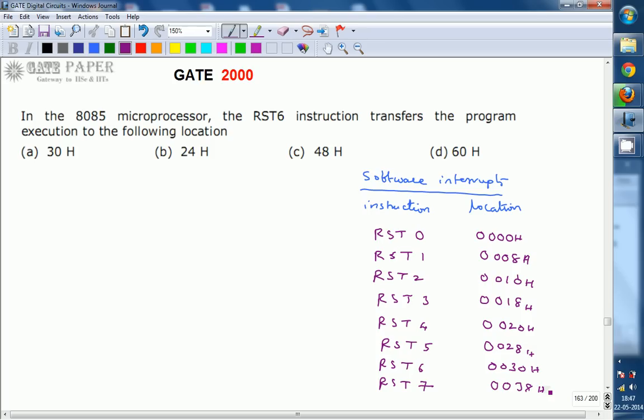At those memory locations, subroutine corresponding to that instruction is available, and whenever this instruction is written in the program, the subroutine present at that one is going to be executed. So RST6 instruction is going to transfer the program control to 0030H. 0030H is nothing but the right answer for this one is A.